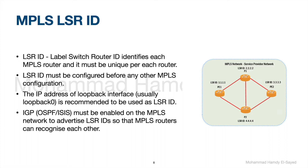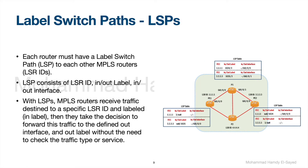We rely on an IGP protocol like OSPF or ISIS to advertise the LSR ID, or the loopback 0 interface of the router, so that all MPLS routers can recognize each other. Once the MPLS router receives an LSR ID, it must define an LSP path to it. Without an LSP path, the router cannot send any MPLS traffic.